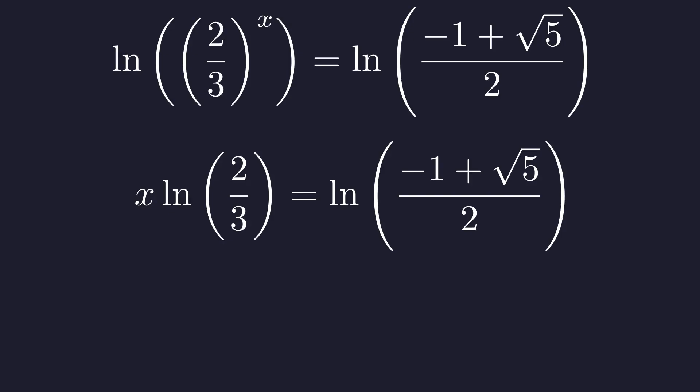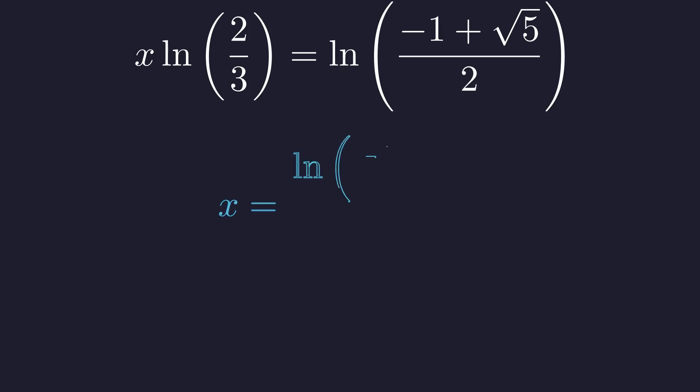Applying the logarithm power rule, we bring the exponent down as a coefficient. Since the base 2/3 is less than 1, its logarithm is negative. Solving for x by dividing both sides gives us our exact solution. Since both numerator and denominator are negative, our result is positive, as expected.